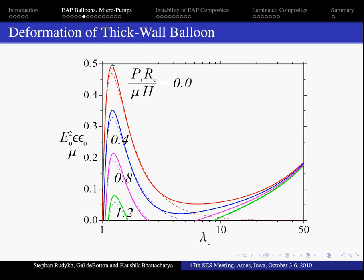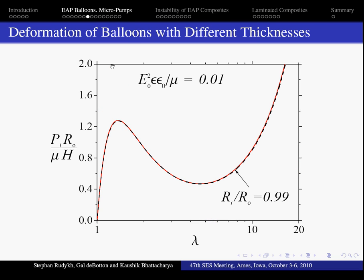It is interesting how the balloon thickness impacts the solution. The red curve corresponds to the thin-wall approximation. For the ratio of inner-to-outer radia equal to 0.99 the general solution overlaps with the approximated one.